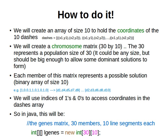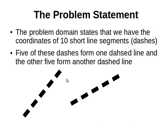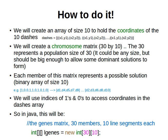We mentioned that we have those 10 short line segments, we have their coordinates, and we wanted to split them into two groups of five. Each five dashes form one big dashed line, and we want the coordinates of each dashed line. We spoke briefly about the representation — remember the two important things we need to decide when solving a problem using genetic algorithms.